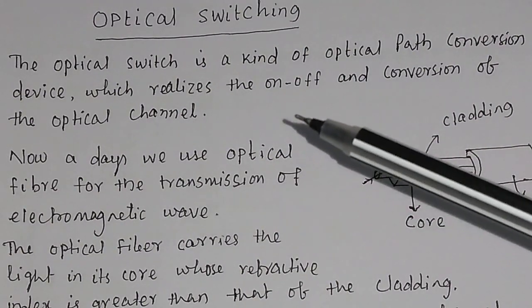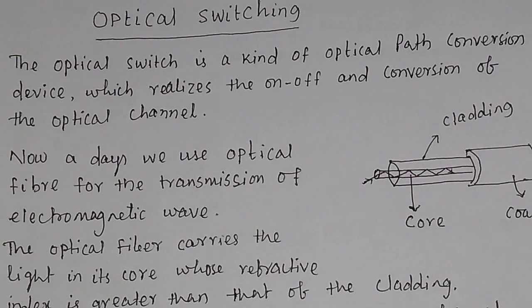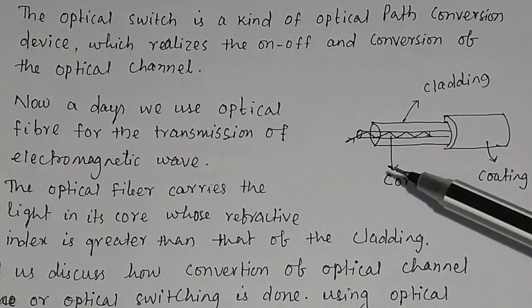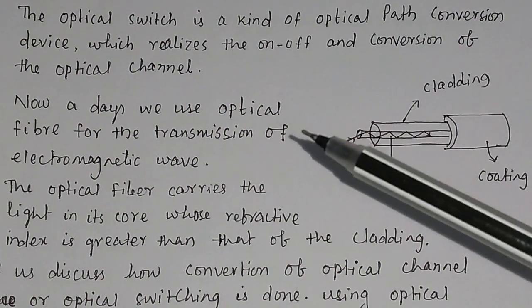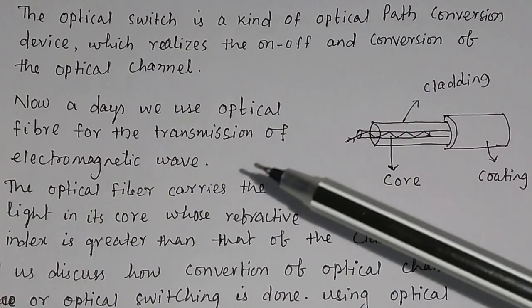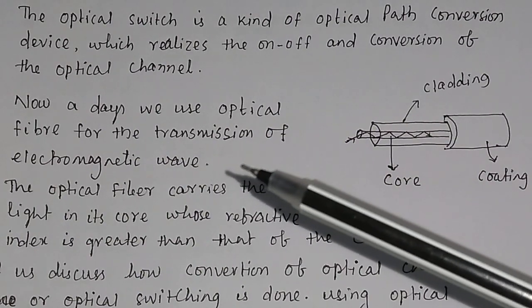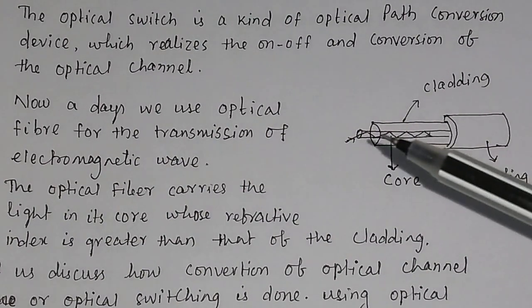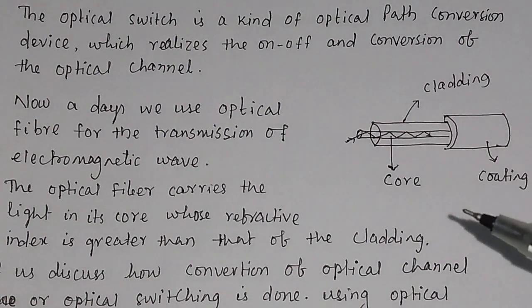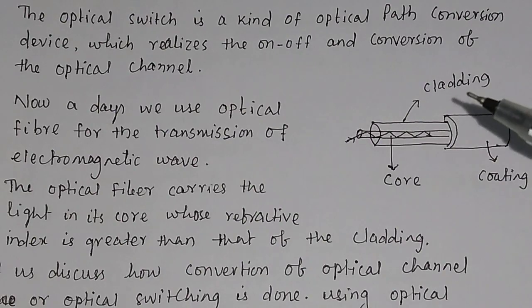Now let us discuss what is optical switching. In previous video we have discussed about optical fiber. Through optical fiber we generally transmit electromagnetic wave. In optical fiber you have a core and above the core you have cladding, then you have a coating over the cladding.